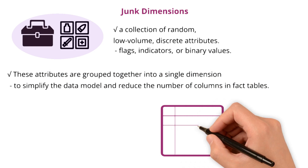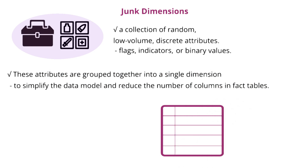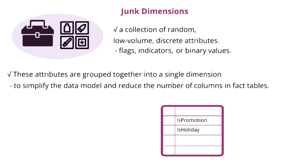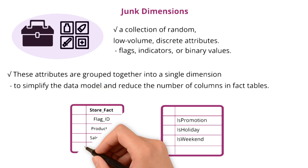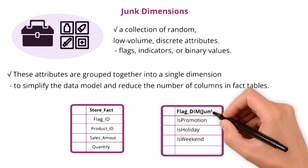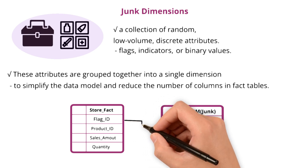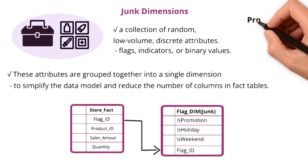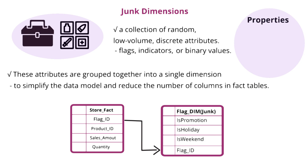For instance, in a sales database, you might have various binary attributes like: 'is promotion' — whether the sale was made on promotion; 'is holiday' — whether the sale occurred on a holiday; or 'is weekend' — whether the sale happened over the weekend. Instead of having separate columns for each of these attributes in every fact table, they can be consolidated into a single junk dimension. This way, the fact table can reference this collection with one key, streamlining the structure. Its key properties are: simplicity, efficiency, clarity, and manageability.